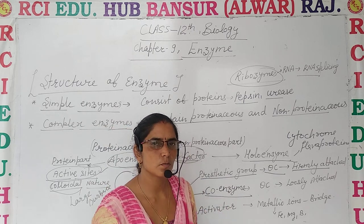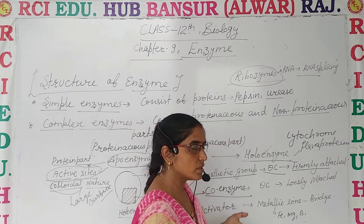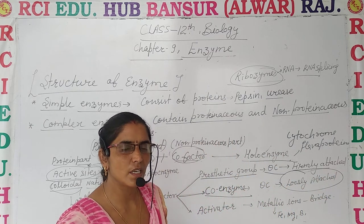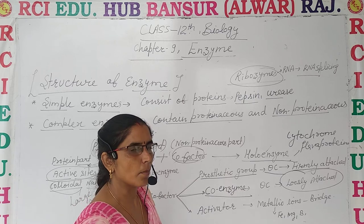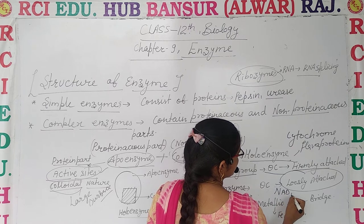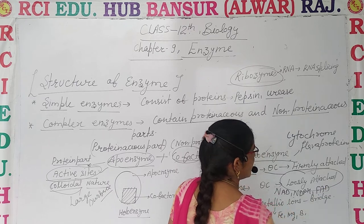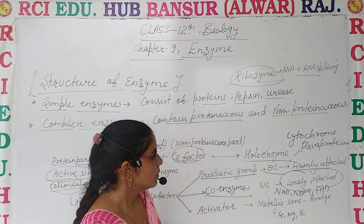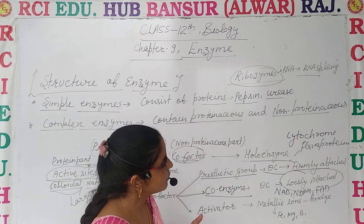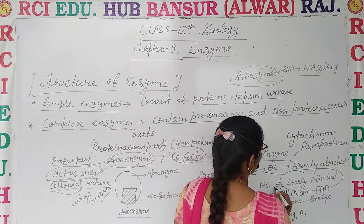The second type of co-factor is co-enzyme. These are also organic in nature, but the difference is that they are loosely attached to the apo-enzyme. Examples include NAD and NADPH. These are examples of co-enzymes.